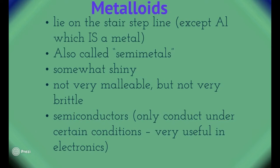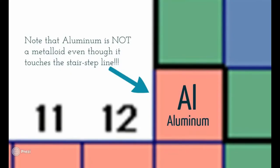Metalloids are called semi-metals or semiconductors because they do conduct electricity, but not so much that they overheat. That's why they're perfect for microchips, which is why silicon is the one we talk about a lot — he's right in the middle, he's perfect. Note that aluminum is NOT a metalloid even though it touches the stair-step line — he's the only exception. He is actually a full metal and has all of the properties of a metal.